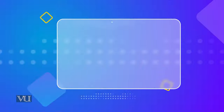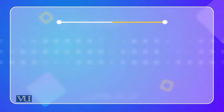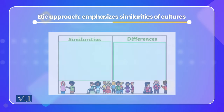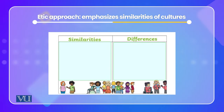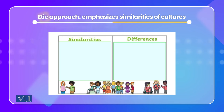In cross-cultural psychology, there are two approaches. The etic approach looks at similarities between two cultures. The emic approach is unique — it examines what is distinct within a particular culture or different contexts.